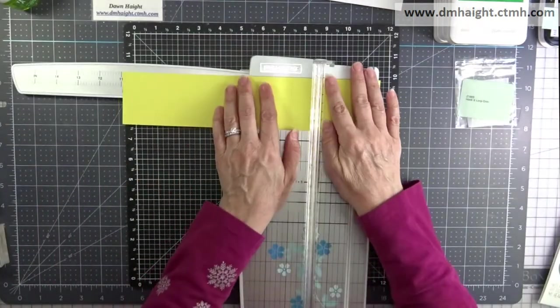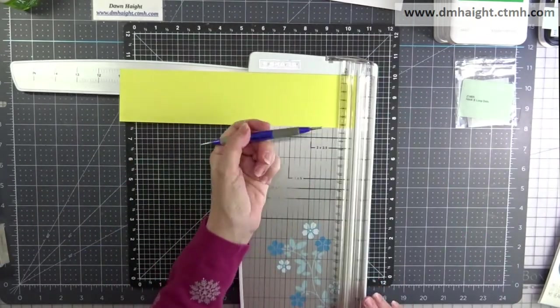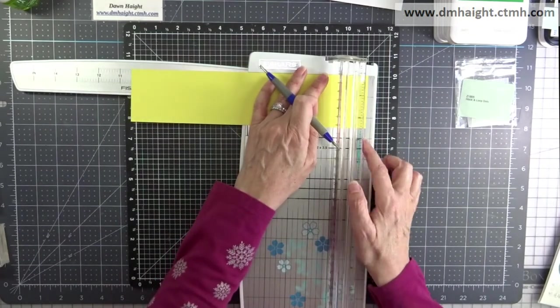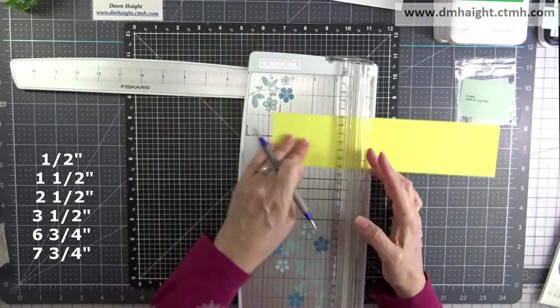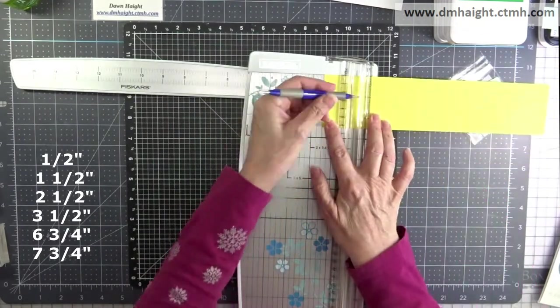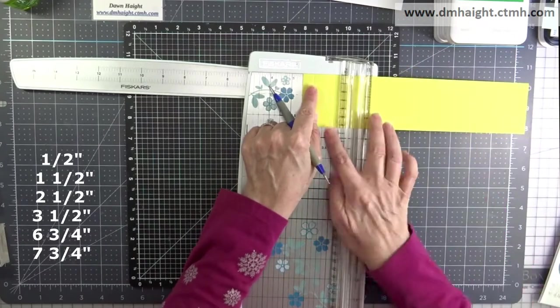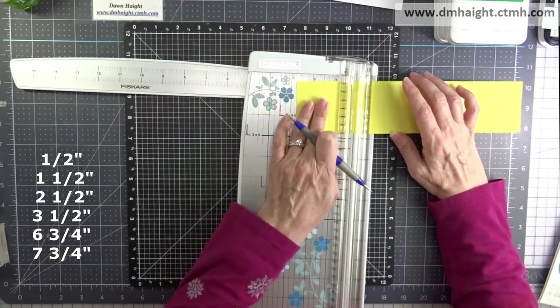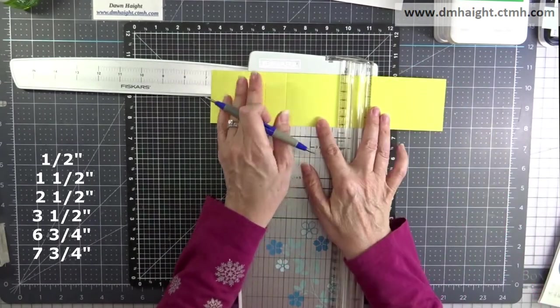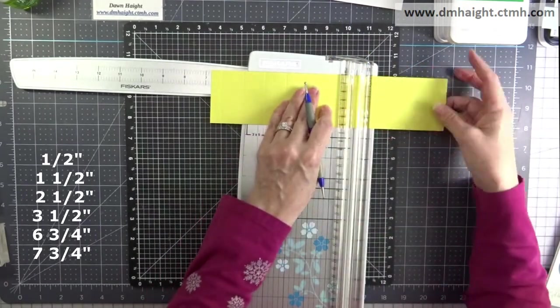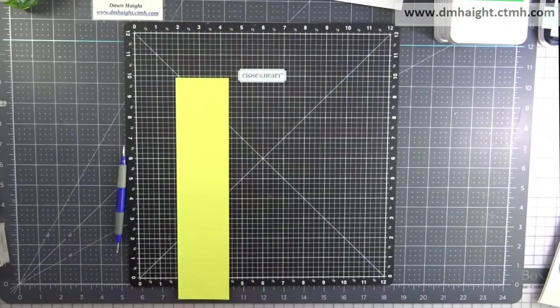You're going to need a piece of cardstock cut at two and a half by eleven. Get your scoring stylus out and just use the track in your trimmer. I'm going to move it over half an inch and then score. Then I'll flip it around and start scoring at one and a half inches, two and a half inches, three and a half inches, six and three quarters inches, and seven and three quarters inches.